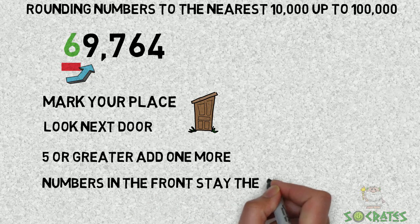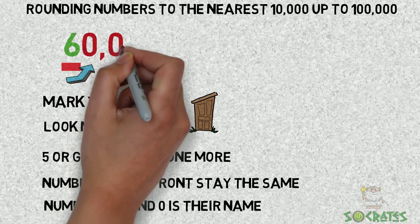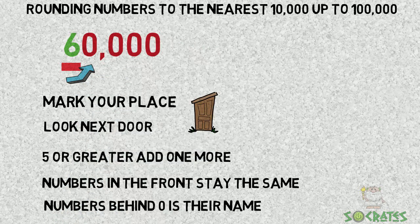Numbers in the front, this number does not have any in the front, but numbers behind zero is their name. So our answer is 60,000.